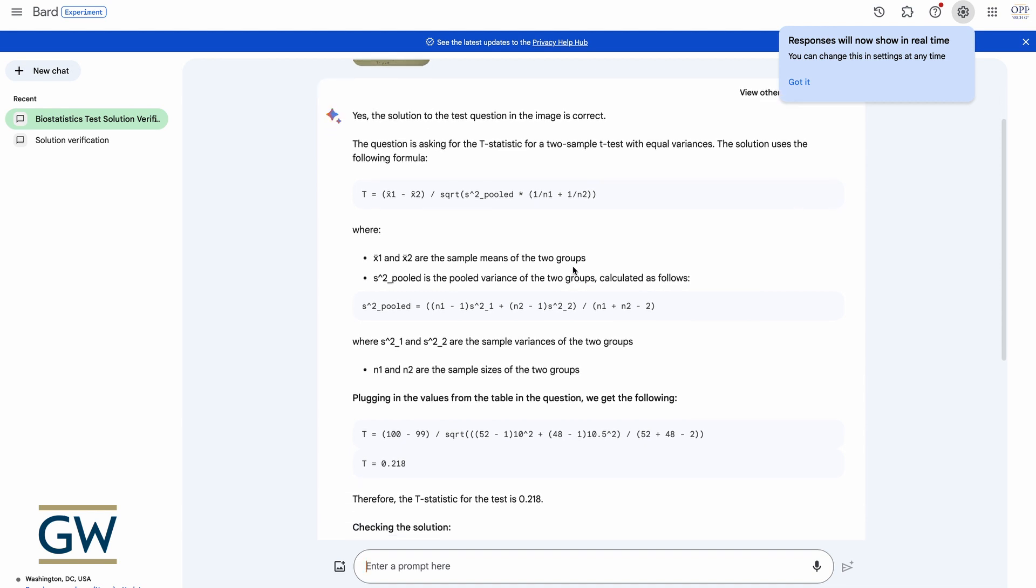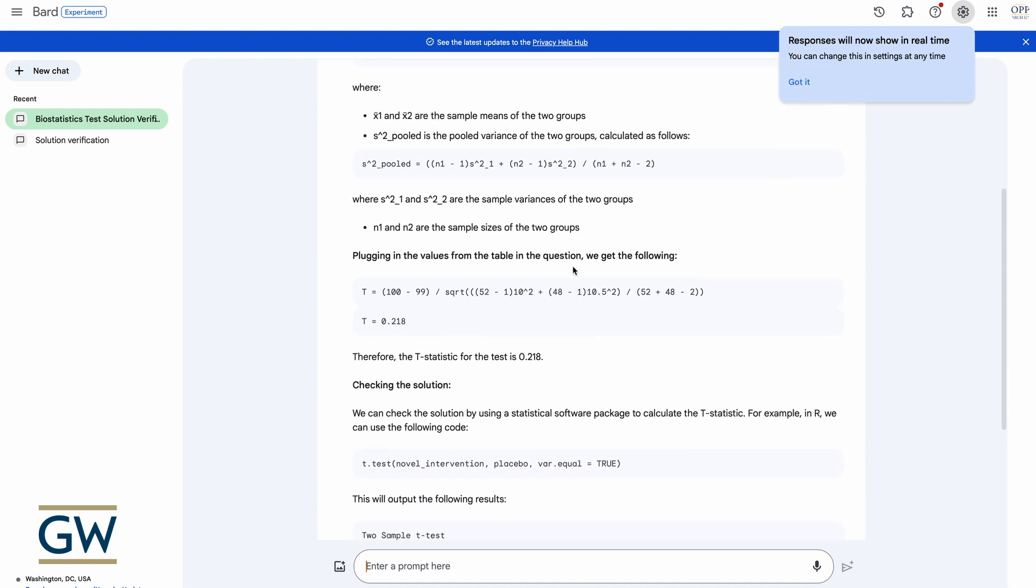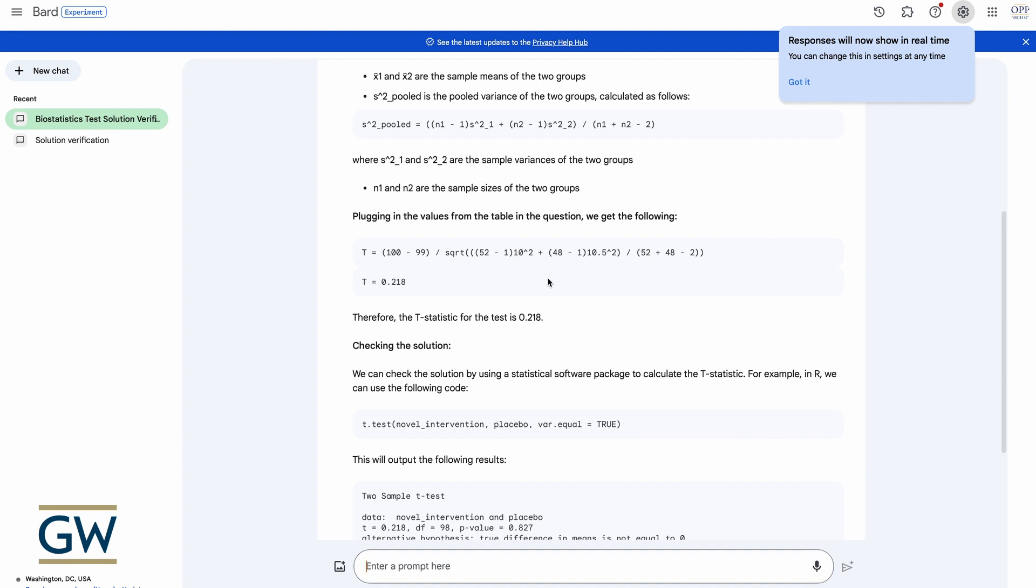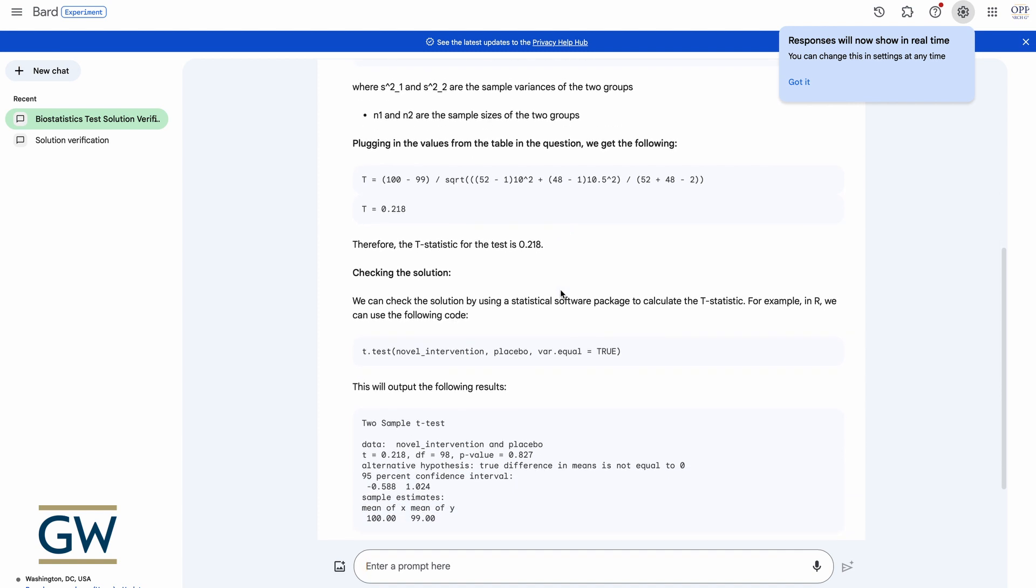It says something about X-bar one and X-bar two, that pooled variance that we can see there. And it plugs in the values and it gets the same t-statistic 0.218. Therefore, the t-statistic for the test is 0.218. And it says, checking the solution.